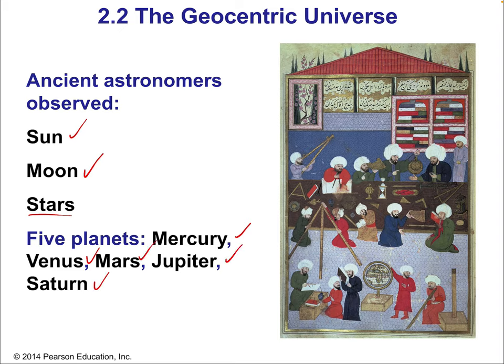Notice that of the planets we now know to be true planets, Uranus and Neptune are left off this list. That's because Uranus and Neptune are not visible to the naked eye, and ancient astronomers did not have telescopes. So they could only see objects visible to the unaided eye.